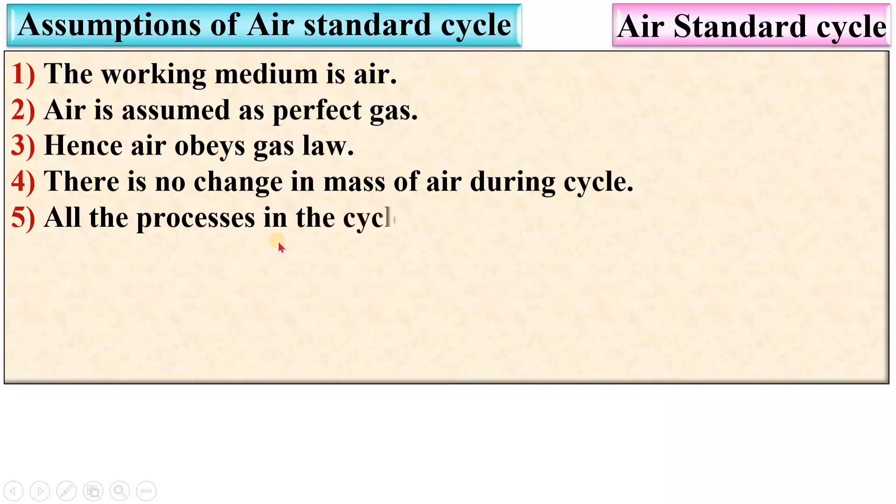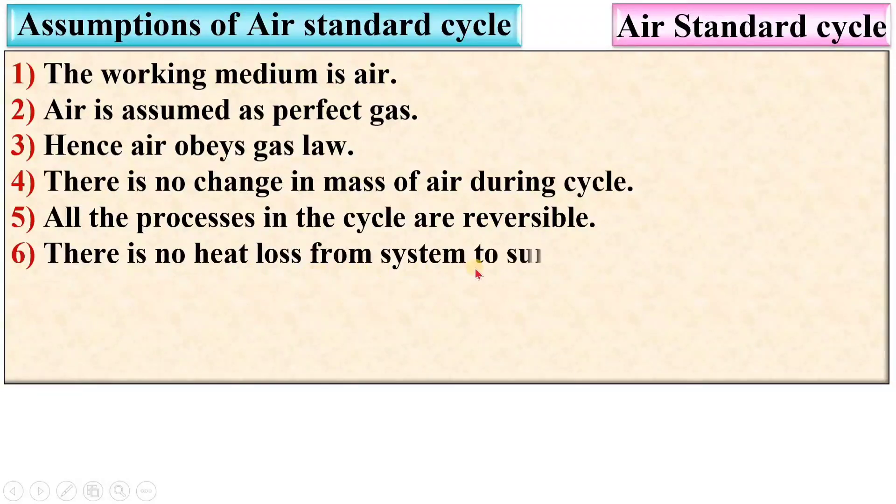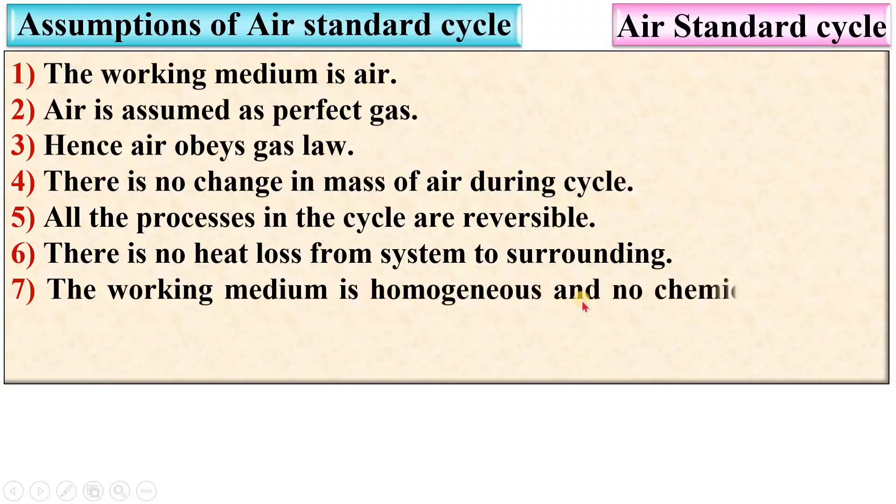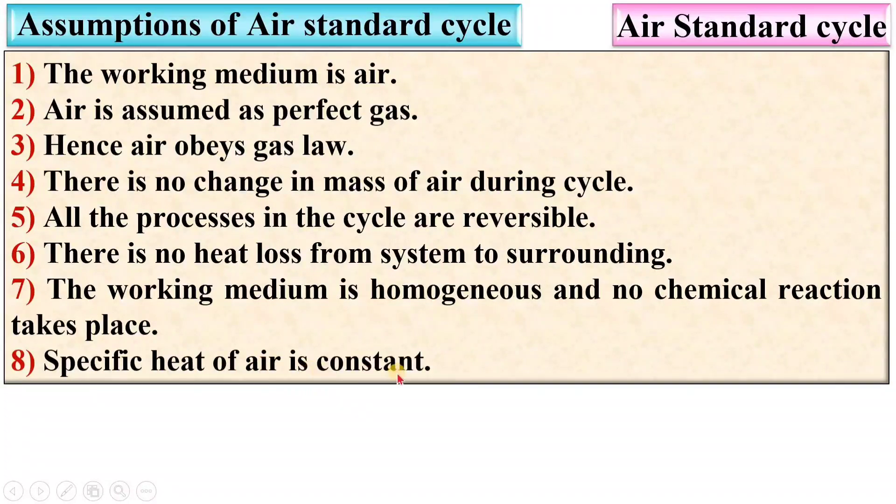All the processes in the cycle are reversible, that means frictionless process. There is no heat loss from system to surrounding and vice versa. The working medium is homogeneous and no chemical reaction takes place. Specific heat of air is constant.